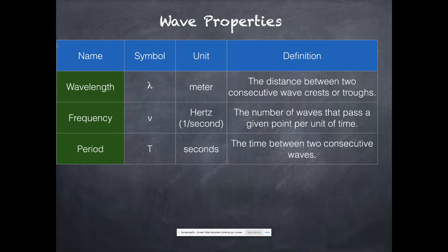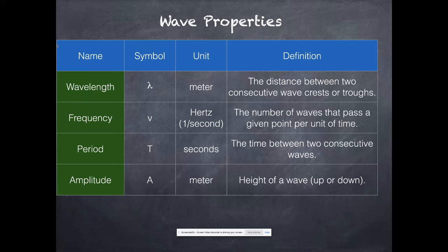Amplitude. Letter A, capital A. The unit's the meter. And it is the height of a wave, whether we're talking about up or down. Because electromagnetic waves are perfectly symmetric, unlike water waves. Electromagnetic waves always go the same distance up that it goes down.